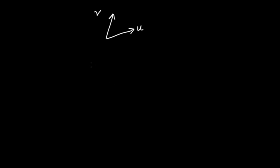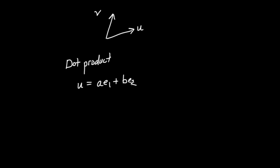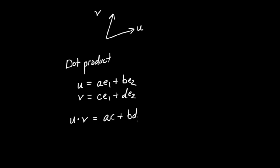We're interested in doing some operations with these vectors. One operation you're probably already familiar with that we'll use in geometric algebra is the dot product. Conceptually, the dot product takes in two vectors and outputs a scalar. If U equals A·E1 + B·E2 and V equals C·E1 + D·E2, then U dot V equals AC plus BD — the product of corresponding components.